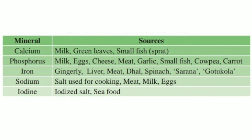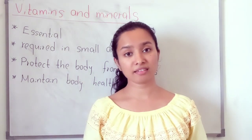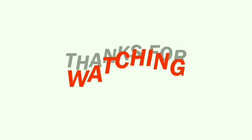Iron is found in ginger, lean meat, liver, meat, duck, spinach, sarana and gotu kola — which are green leaves. Sodium is found in salt used for cooking, as well as meat, milk and eggs. Iodine is found in iodized salt, and mostly in seafood. Vitamins and minerals are mostly found in vegetables and fruits, so we have to take more vegetables in our diet.